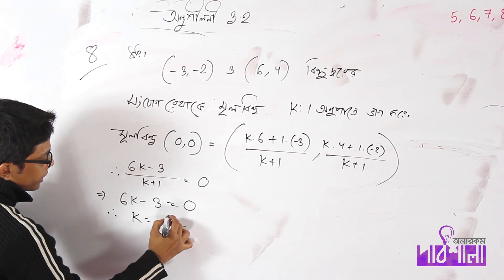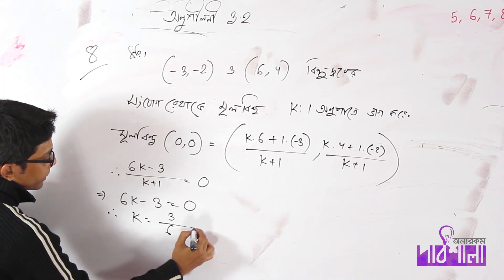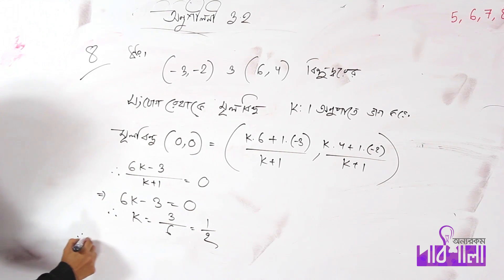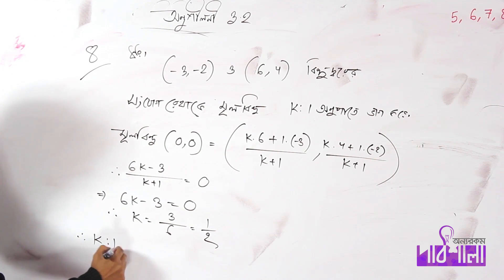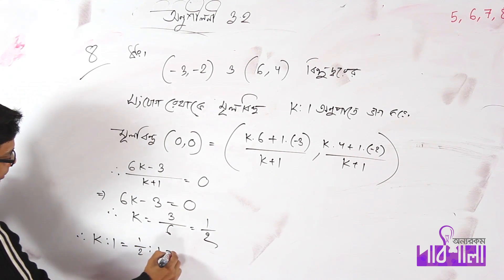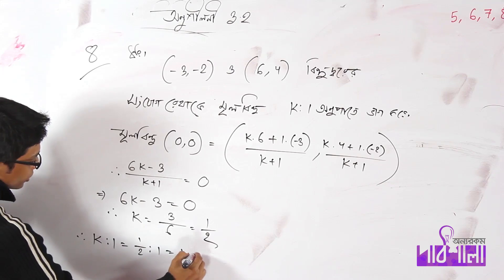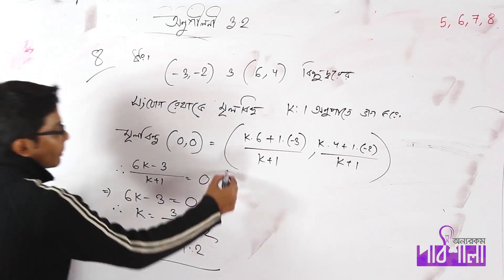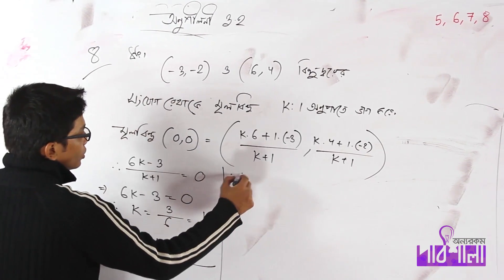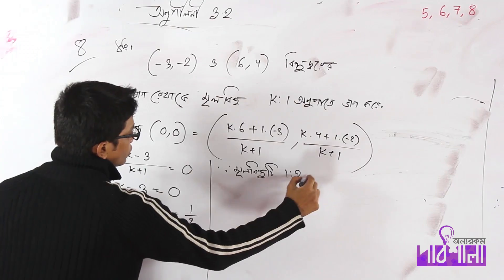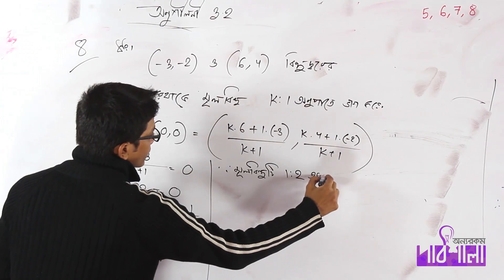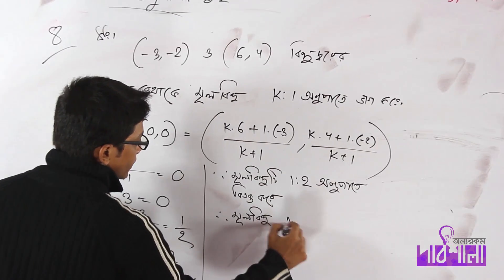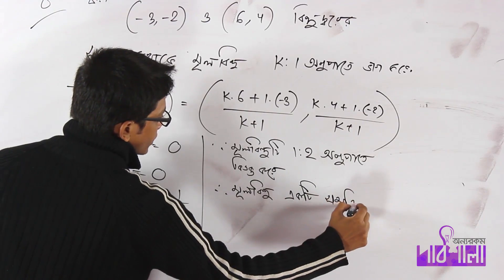We'll call it k minus 1 by 2. So k minus 1 equals 2. k minus 1 equals 2, so 1 by 2 equals 2. Then 10 equals 2. We'll call it at 0. It is 0.0, which means 0.1 is 0.1.